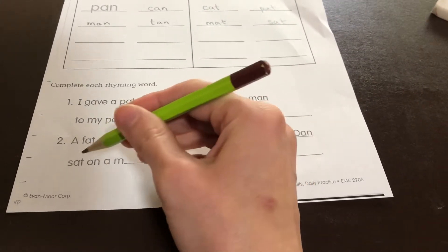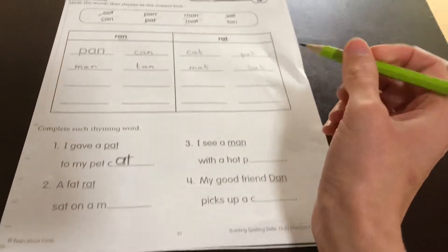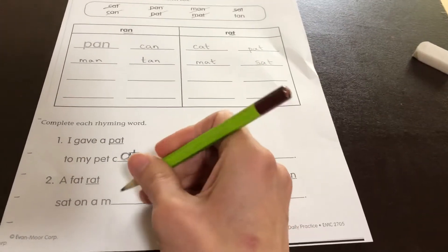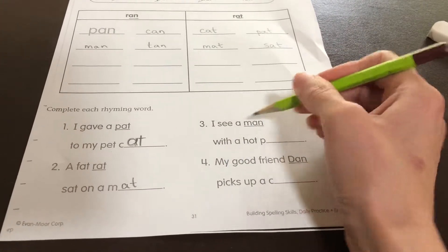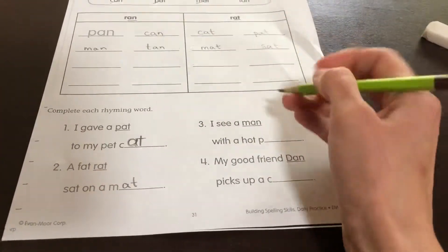Alright. A fat rat sat on a mat. I see a man with a hot pan. My good friend Dan picks up a can.